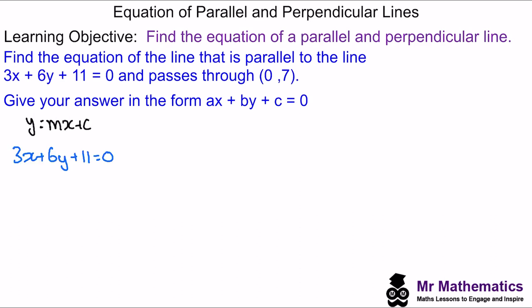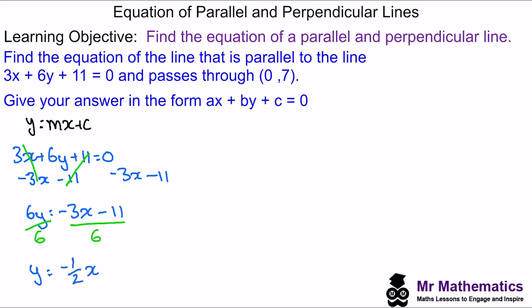The easiest way to identify the gradient of this line is in the form y equals mx plus c. So we'll take away the 3x and the 11 from both sides, which means those terms will cancel. So we're left with 6y equals negative 3x minus 11, and we'll divide both sides by 6. The equation in the form y equals mx plus c tells us that the gradient of this line is negative one half.